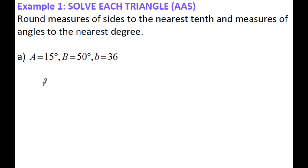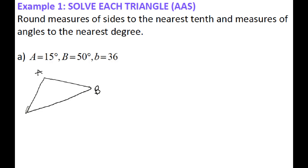For this first example, angle A is 15 degrees, angle B is 50 degrees, and side B is 36. I'm going to sketch out a generic triangle with vertices A, B, C and sides A, B, C. Angle A is 15 degrees, angle B is 50 degrees, and side B is 36. My triangle is not drawn to scale. The key with Law of Sines is having an angle and its corresponding side — here I have angle B and side B.